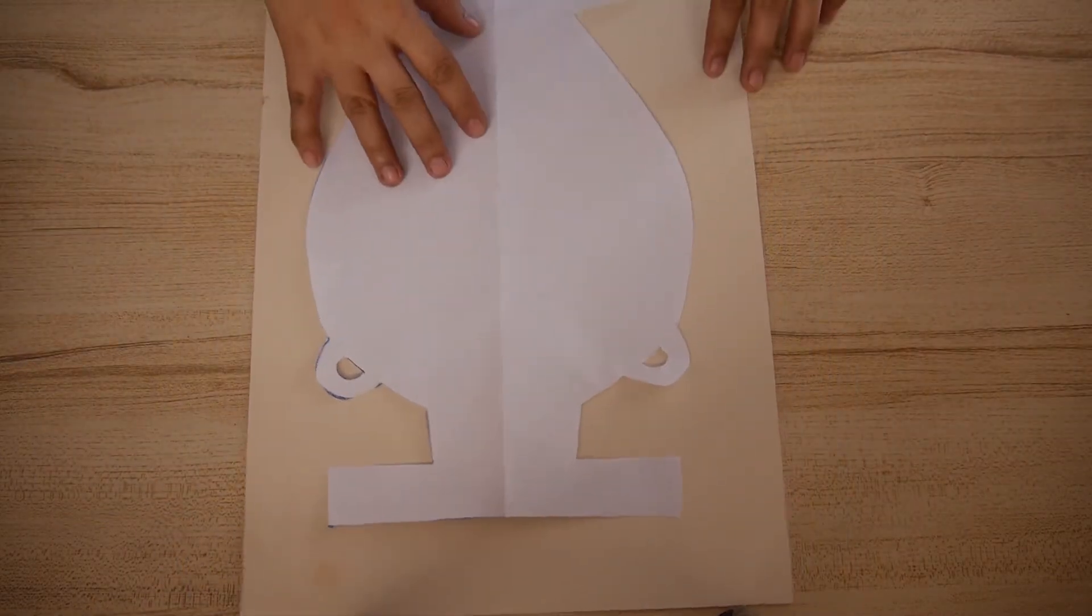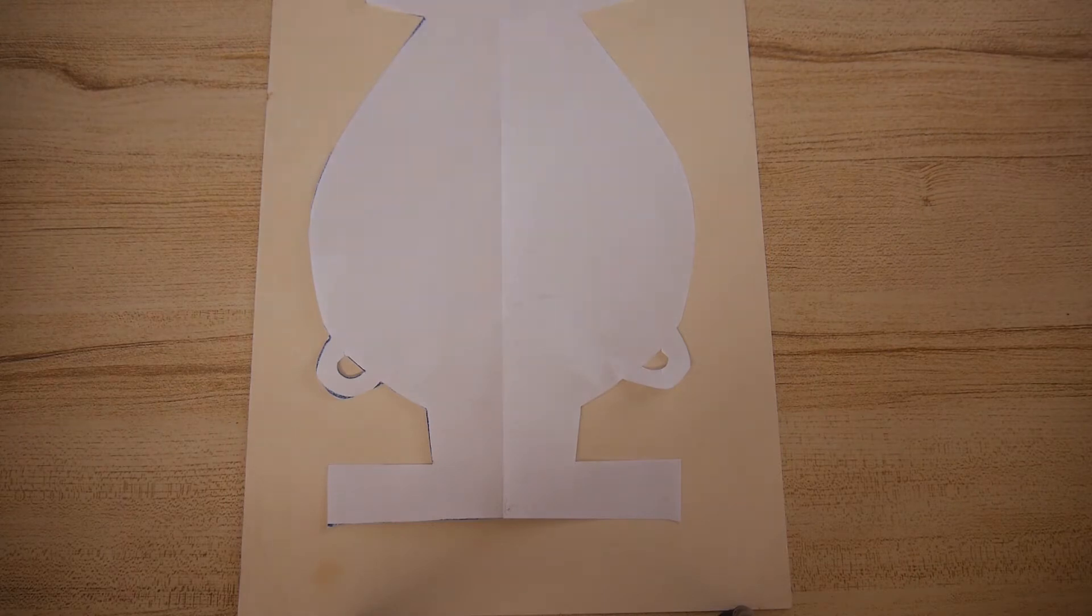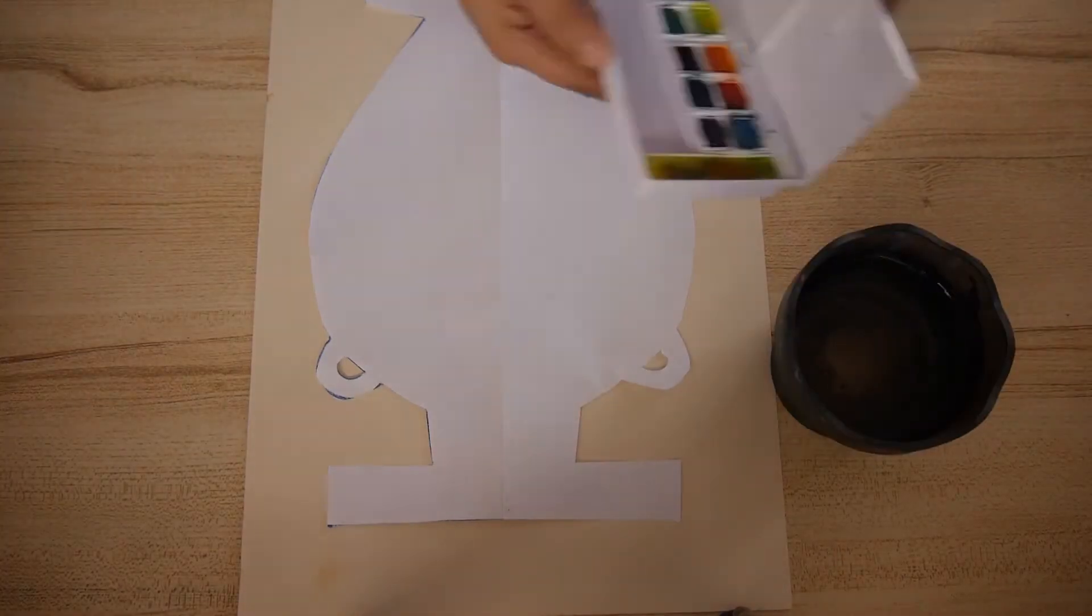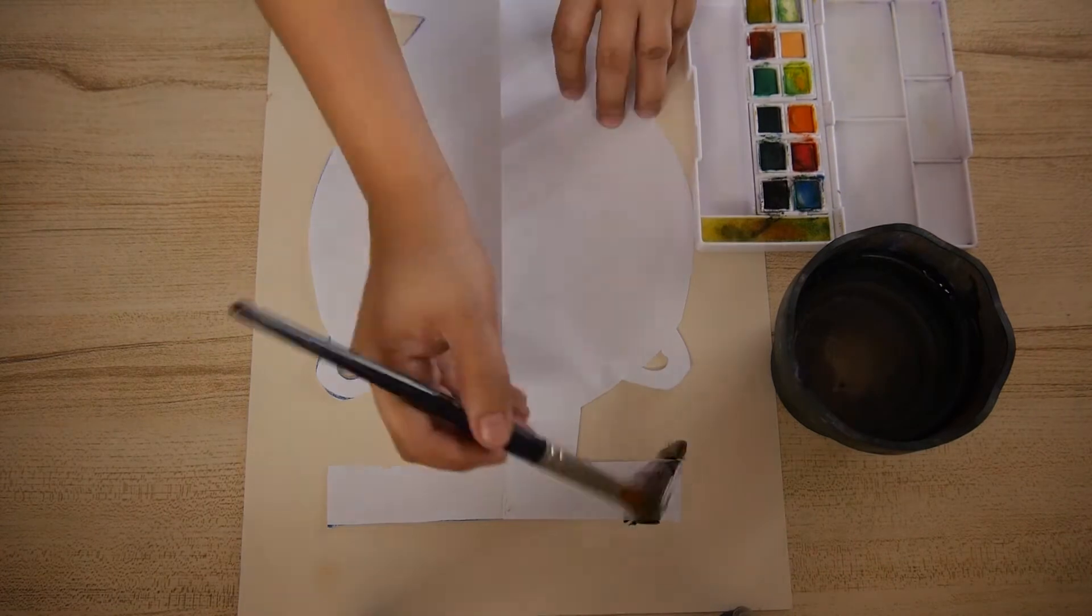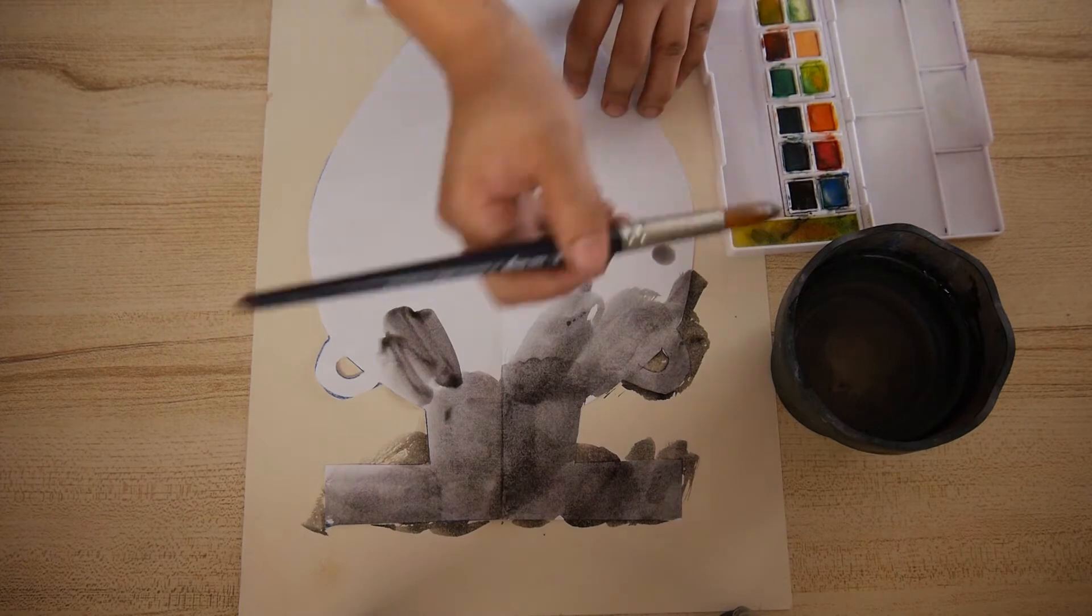Another way is to paint your paper with black paints, but be sure to put a paper underneath your painting so that you don't mess up the table at your house. Just like what I did here.